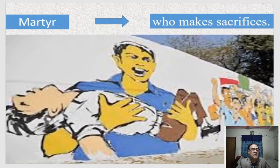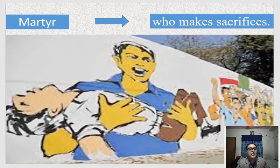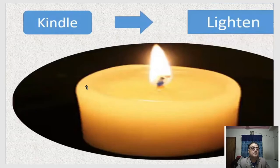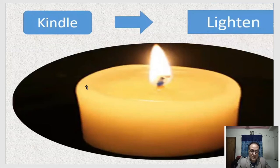Next word: 'martyr.' Look at the picture. A martyr is someone who makes sacrifices. Next word: 'kindle.' Look at the picture and try to guess the meaning. Kindle means: to light or ignite.